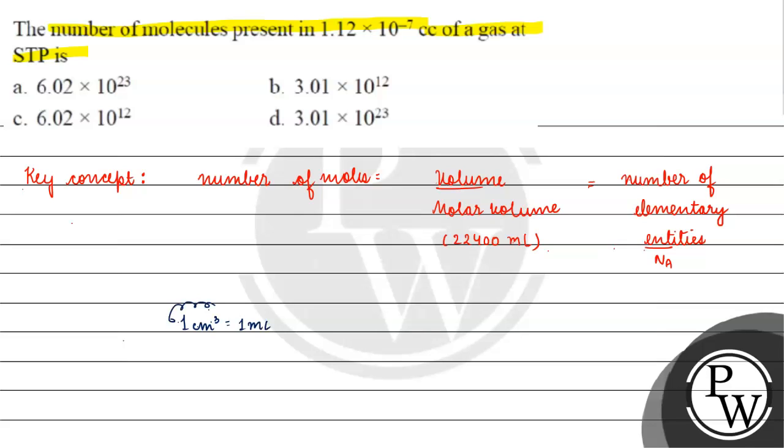The first thing is, we have found what is the volume. 1.12 into 10 raised to the power minus 7 mL by 22,400 mL is equals to number of molecules by Avogadro's number.